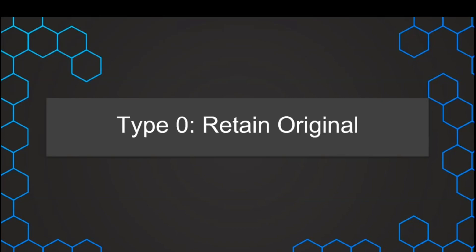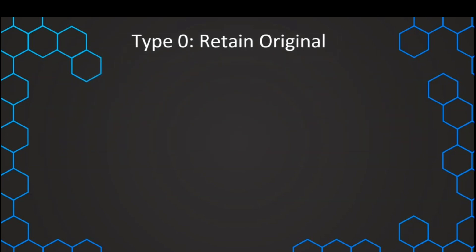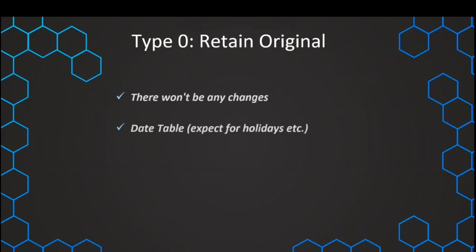Let's talk about the first type of slowly changing dimensions in which we only retain the original data. This is applicable if there are no changes in our dimensions, so we really need to make sure that there are no changes occurring in our dimension. In that case, we don't need to do anything.